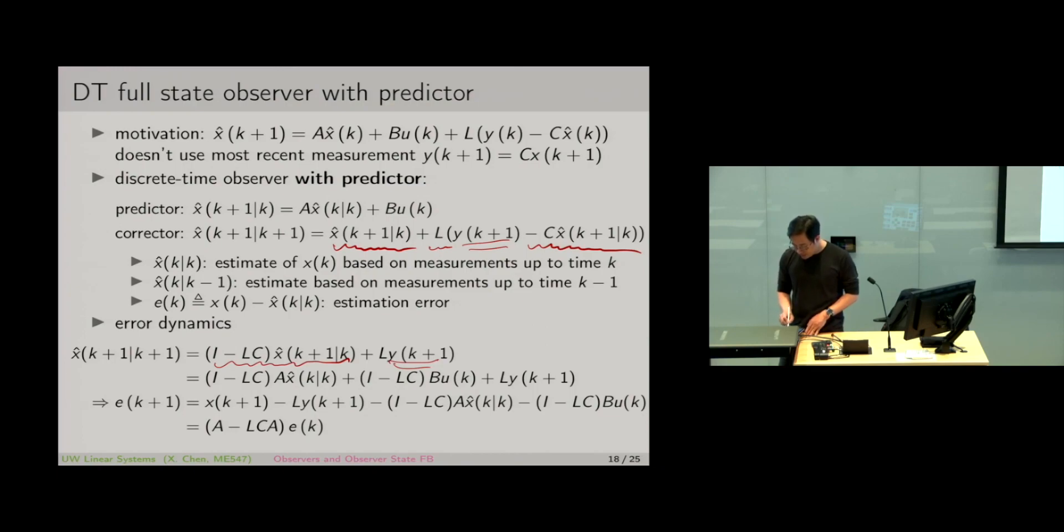Let us now introduce this predictive equation into here. Let's replace X hat(K+1|K) with something about X hat(K|K). Bringing this in, we will have A times X hat(K|K), and then we will have a BU term. This is from the predictor. This whole matrix comes from a scaling factor in the previous equation, so the whole X hat gets multiplied with this matrix. That's why it's (I-LC) times BU.